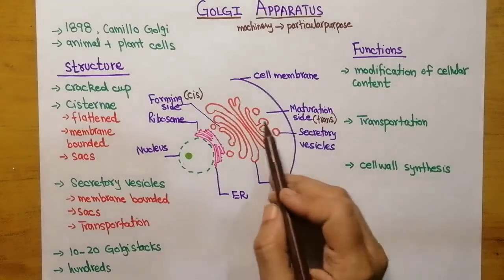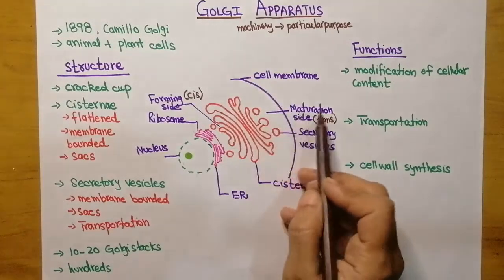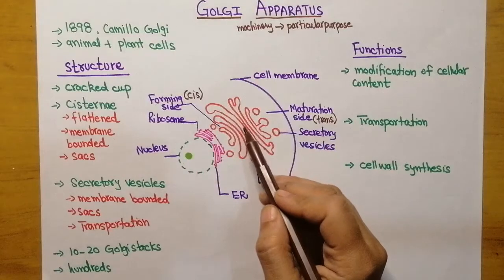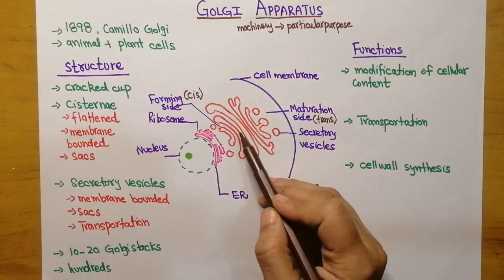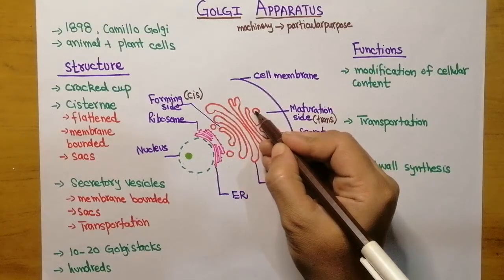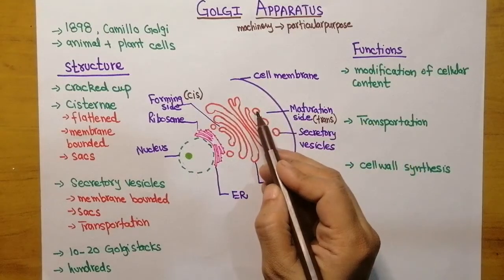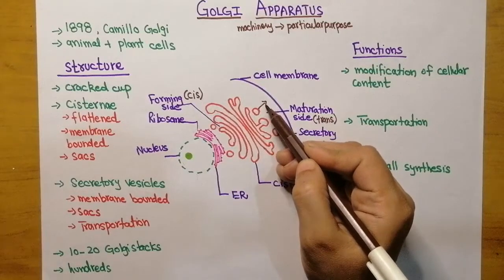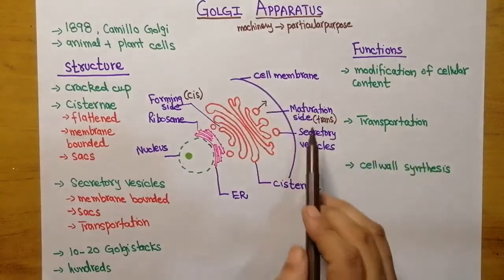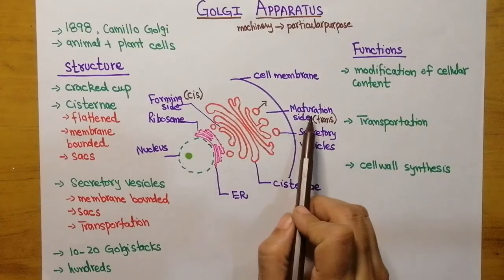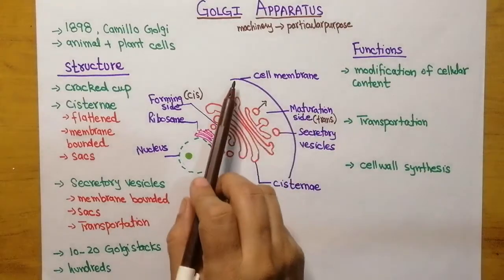At the maturation side — the trans side — all the substances which need to be processed inside the Golgi apparatus are processed, and then they are delivered into vesicles. These vesicles then go to different destinations. The maturation side is always facing the cell membrane.